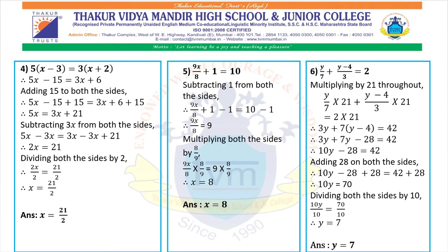Sixth: y upon 7 plus (y minus 4) upon 3 equals 2. Multiplying by 21 throughout, because LCM of 7 and 3 is 21: y upon 7 into 21 plus (y minus 4) upon 3 into 21 equals 2 into 21. Therefore we get 3y plus 7 into (y minus 4) equals 42. Solving the bracket: 3y plus 7y minus 28 equals 42, so 10y minus 28 equals 42. Adding 28 to both sides: 10y equals 70. Dividing both sides by 10, y equals 7.